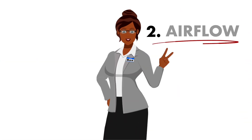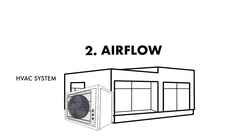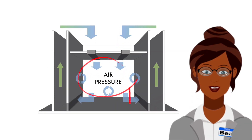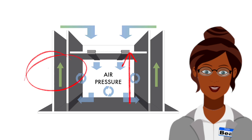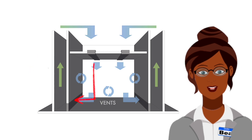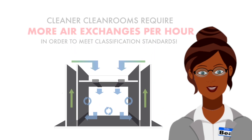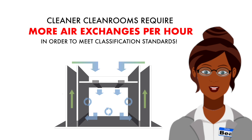2. Airflow. A heating, ventilation, and air conditioning HVAC system should regulate temperature and humidity in the clean room. HVACs also use high-efficiency particulate air HEPA filters to remove particles from the space and pressurize the clean room. When the air pressure in the room is greater than the pressure outside, the contaminated air is pushed out of the room through vents, filtered, and recirculated. Cleaner clean rooms require more air exchanges per hour in order to meet classification standards.